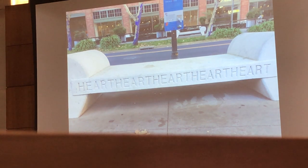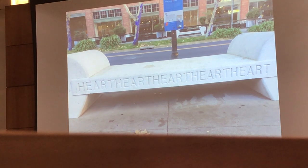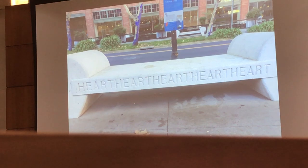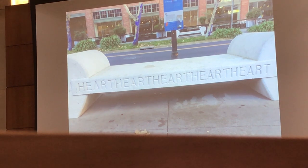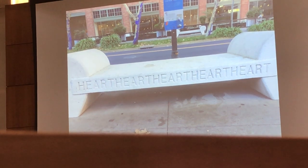Here's another example — a bench outside the Sacramento convention center. Anyone want to tell me what they see on the bench? Audience members called out "art," "heart," and "earth." There are a lot of different things to see in this bench. The takeaway is the same: context shapes what people perceive.